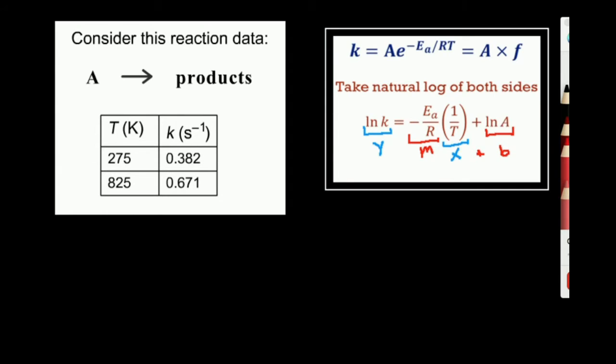So if I group the terms like this, then if I graph natural log of k versus 1 over the temperature, I should get a straight line.